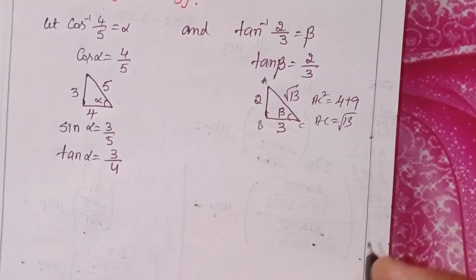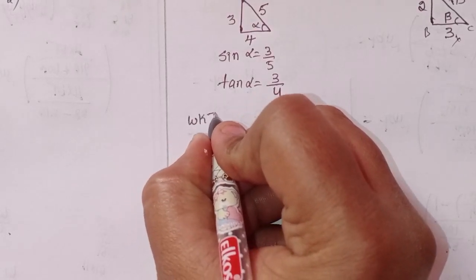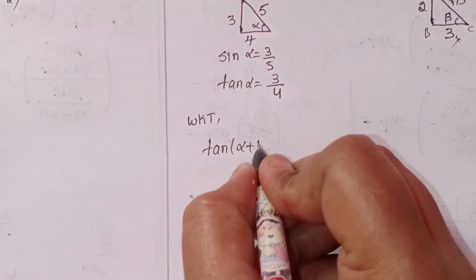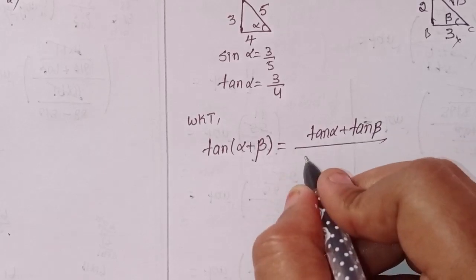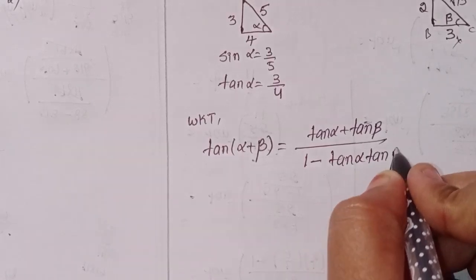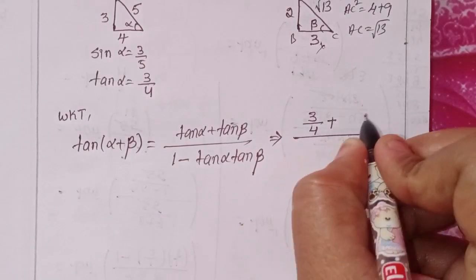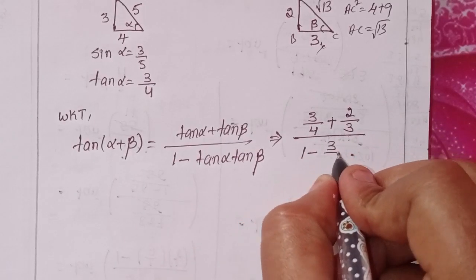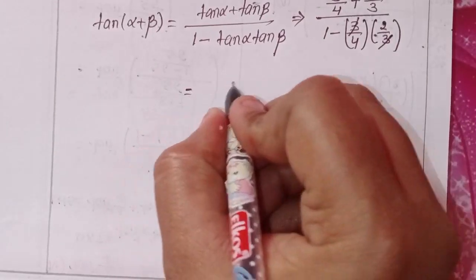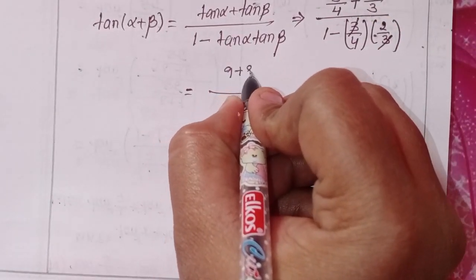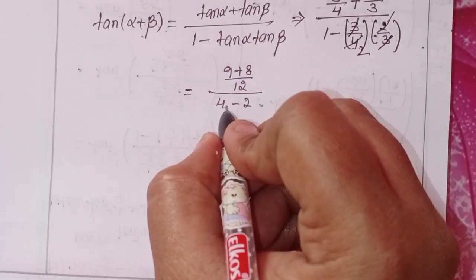We don't need AC here since tan is given. We know the formula: tan(α + β) = (tan α + tan β) / (1 - tan α · tan β). Substituting: tan α = 3/4, tan β = 2/3, so the numerator is 3/4 + 2/3, and the denominator is 1 - (3/4)(2/3).